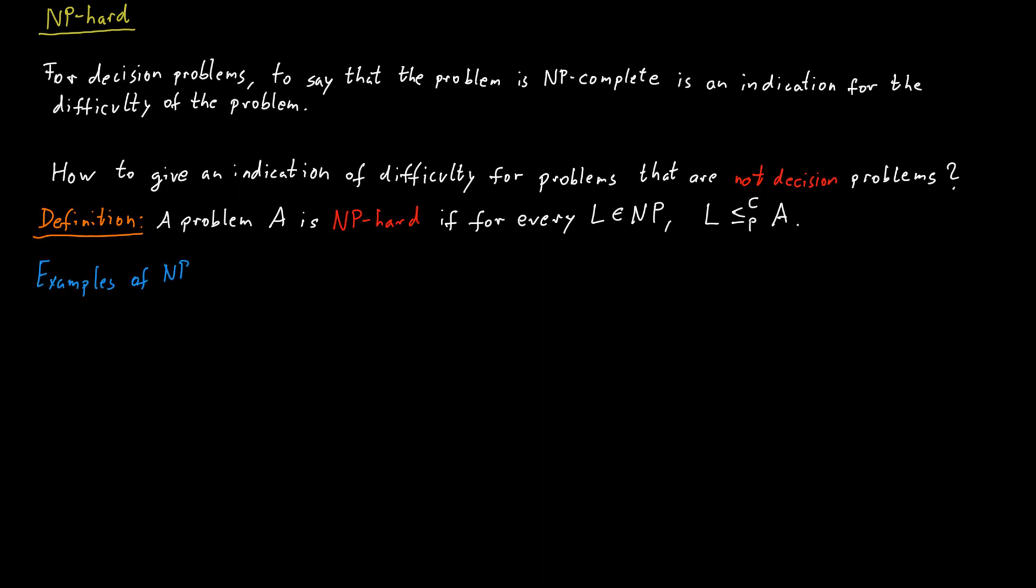The following are examples of NP-hard problems. Finding a minimum vertex cover in a graph is NP-hard. Finding a Hamiltonian cycle in a graph is NP-hard. And the halting problem is also NP-hard.